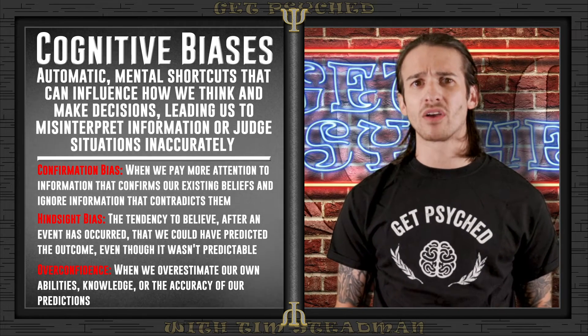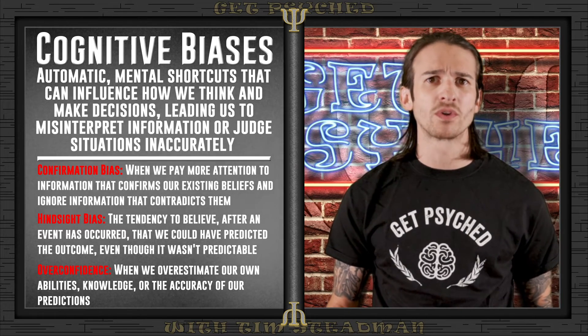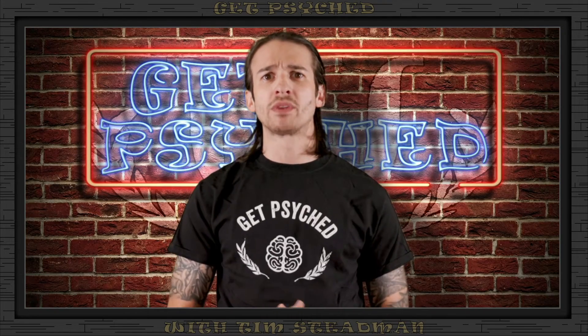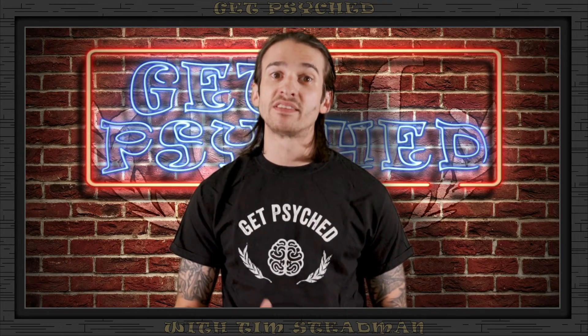Hindsight bias leads to overconfidence — when we overestimate our abilities to predict or control outcomes. With Kevin gone and his friends upset, they might become overly confident in their ability to handle the marathon planning without him, underestimating his impact and potentially facing challenges they're not prepared for.